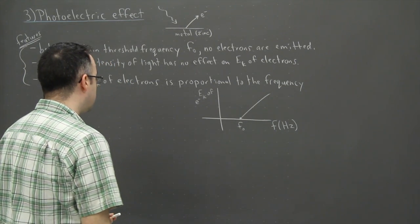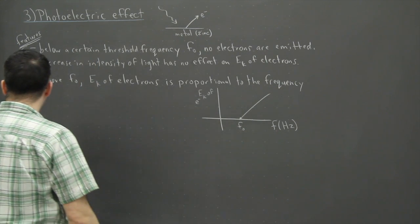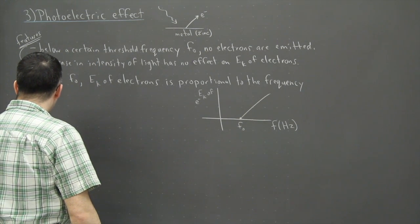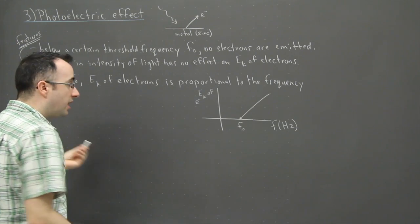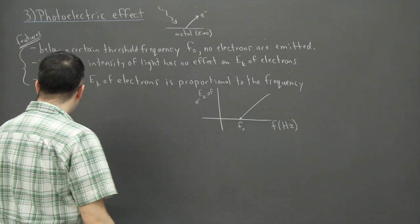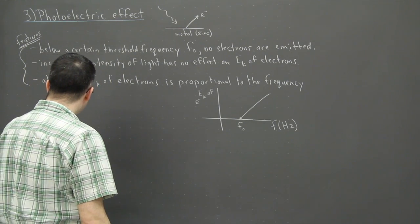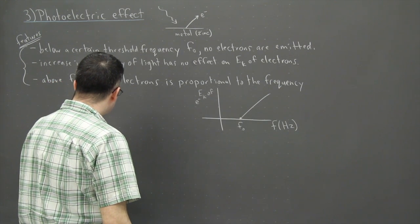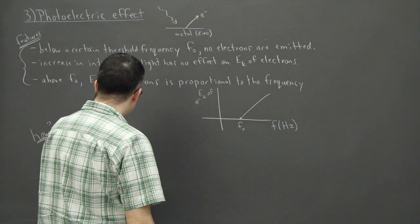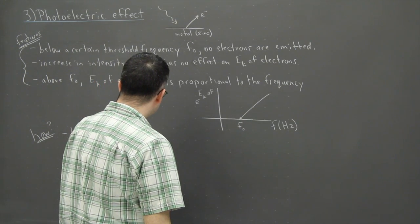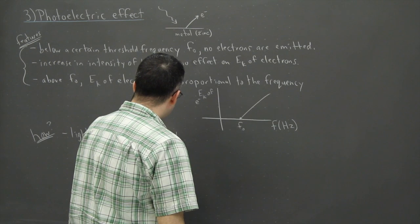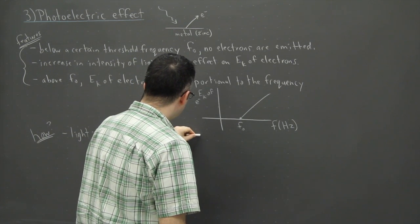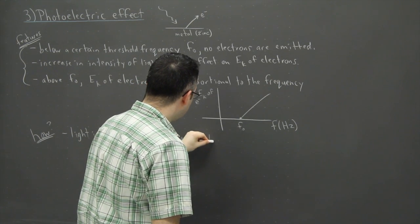Now what could be the reasons, or maybe I'll say, how? This is what Einstein won his Nobel Prize for explaining. He first of all said, he was the first one to actually say that light is quantized. So this brings us back to this whole idea that photons have energy E equals HF.